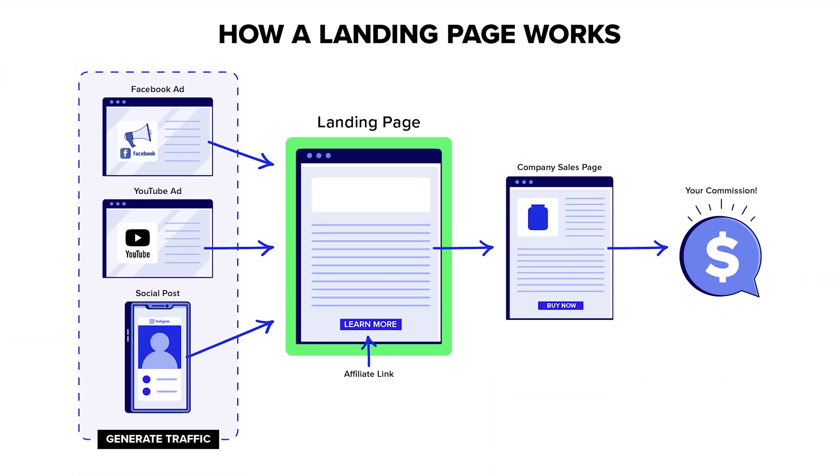A bridge page is simply a page that lives in between your platform — like TikTok, where you're getting your traffic from — and then the vendor's sales page. The bridge page is essentially exactly what it sounds like: it's the bridge from TikTok to the vendor sales page of the offer you're promoting. The first reason you want to use a bridge page is because it's the best at pre-selling or warming up the traffic you're sending to the vendor sales page.